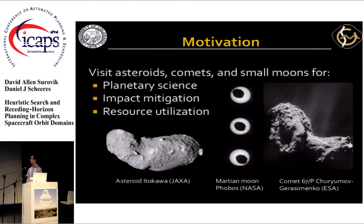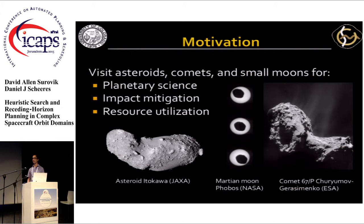The problem that I'm trying to solve is motion around asteroids, comets, and small moons, which are targets of high priority for exploration missions due to their value for planetary science. Sometimes they're called primitive bodies because they're not big enough to undergo geologic processes, so they can tell us a lot about the composition of the solar system during its formation.